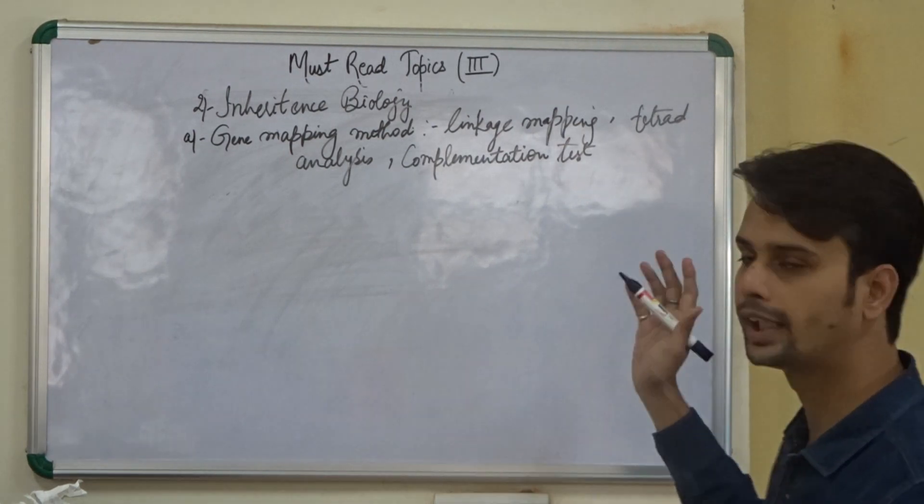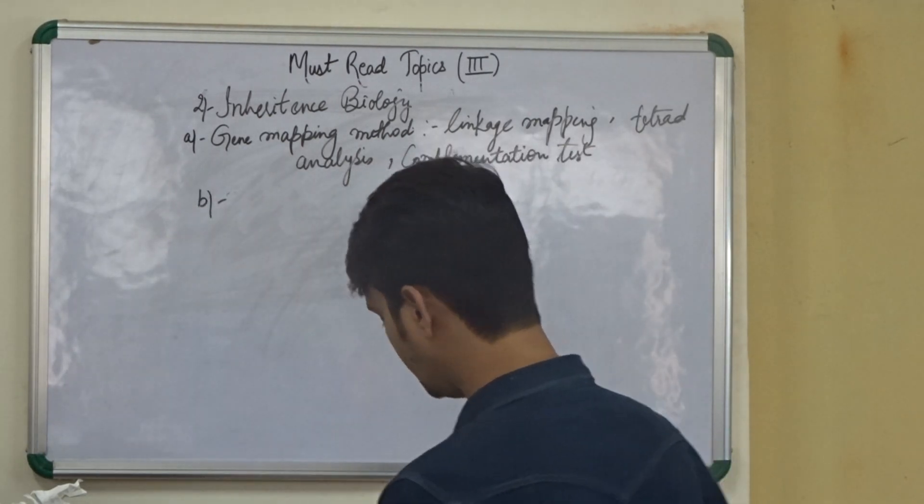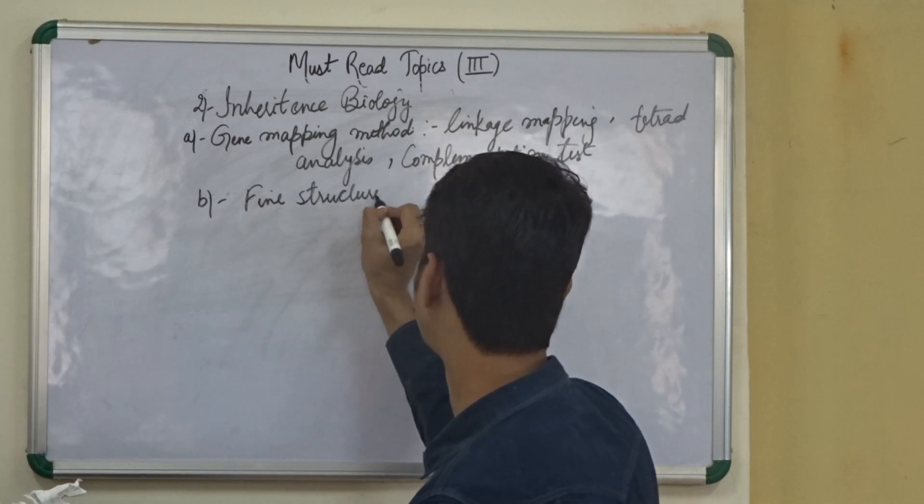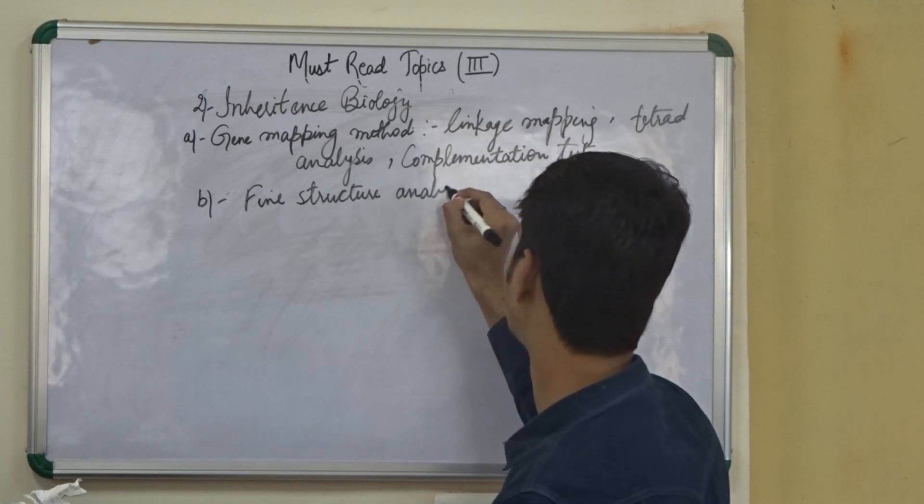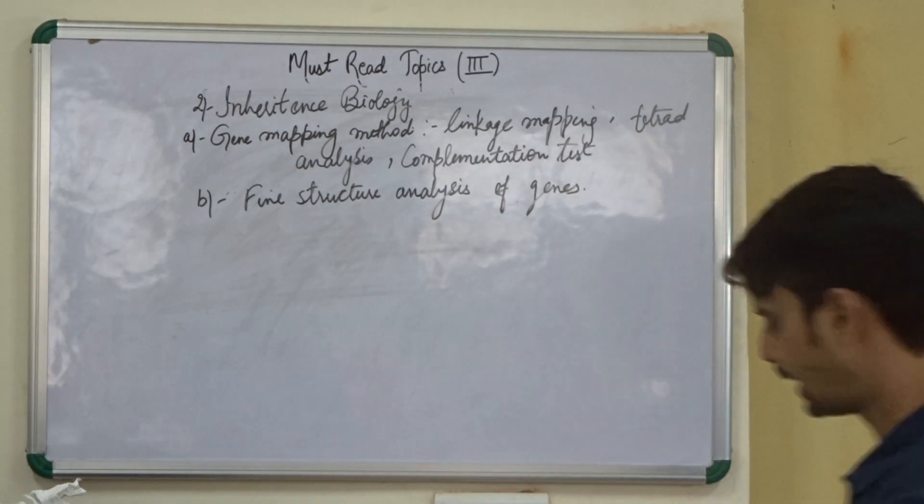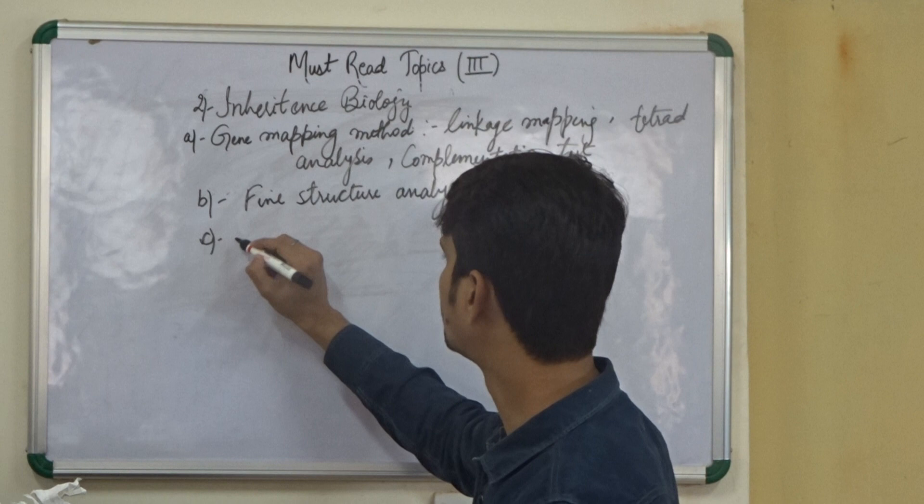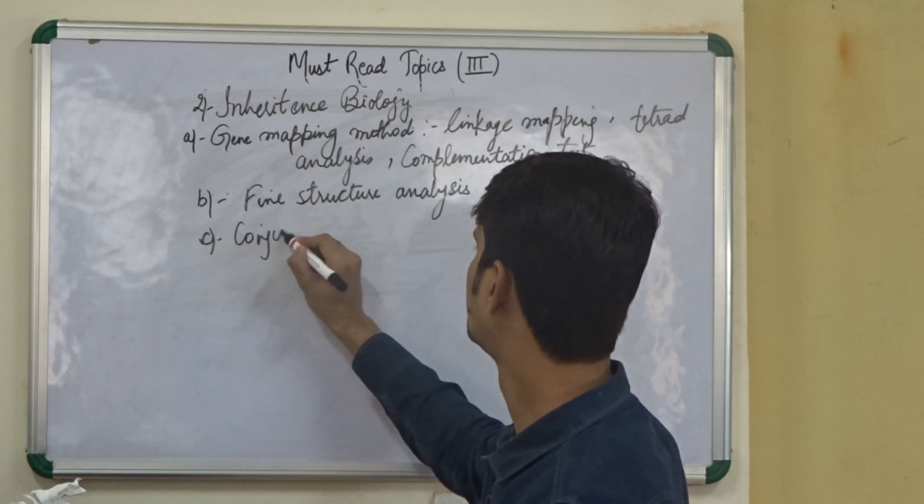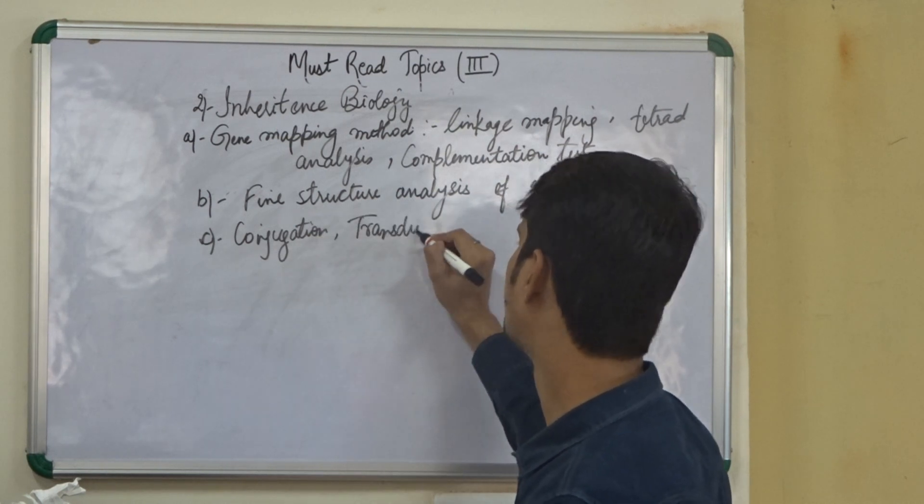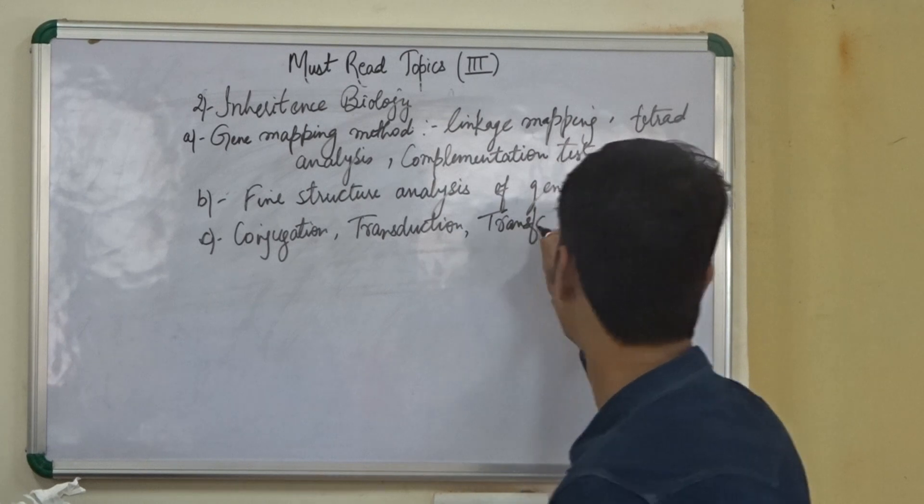So in the gene mapping method we have linkage mapping, tetrad analysis and complementation test. Then in the next one we have fine structure analysis of genes. The C part goes to the various mechanisms that happen in bacteria: conjugation, transduction, transformation.